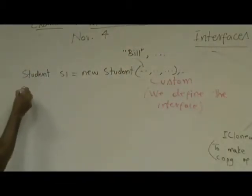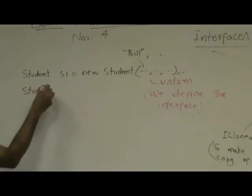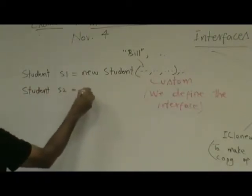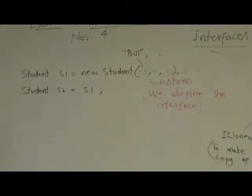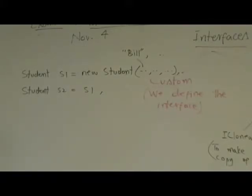Now you try to create a second student, s2 equal to s1, okay? So is s2 a completely separate student? Does s2 have the same data as s1 and does it have its separate memory? Okay, the answer is no, okay?